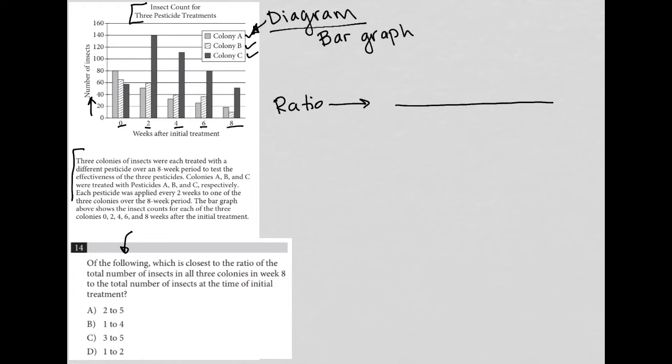So which is closest to the ratio of the total number of insects in all three colonies in week eight? So I'm going to say total number of insects week eight. To the total number of insects at the time of initial treatment. So this is going to be total number of insects week zero. That's the time of initial treatment. So let's figure out what is the numerator here?